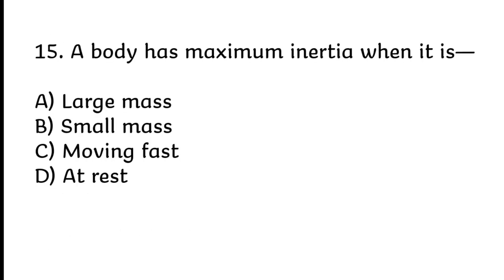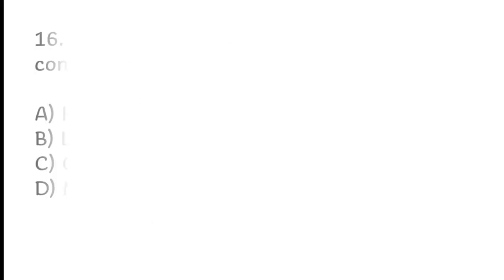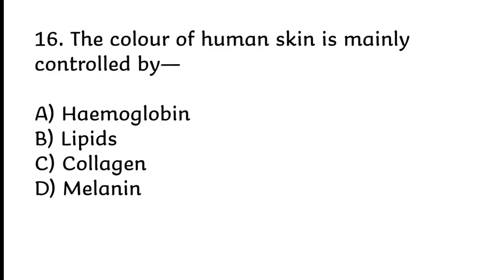A body has maximum inertia when it is large mass. Correct answer is A, large mass. The color of human skin is mainly controlled by melanin. Correct answer is D, melanin.